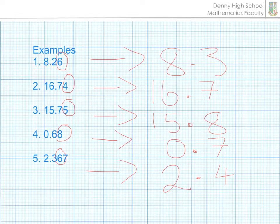It doesn't matter how many numbers you have after your point. If you are rounding to one decimal place, you always circle the second decimal figure. And that number will determine whether the digit moves up or it stays the same.